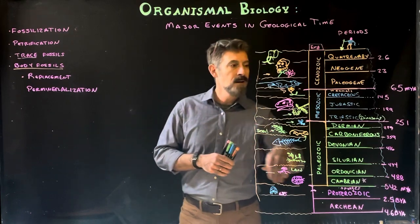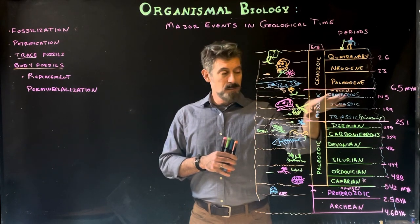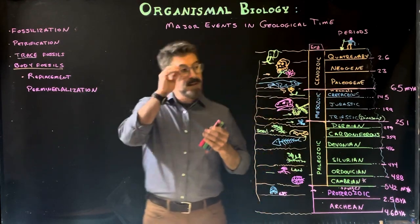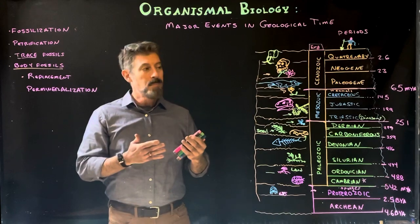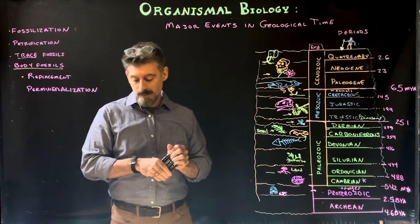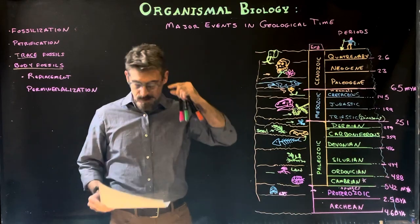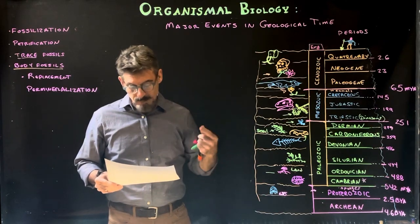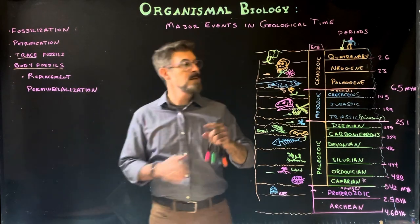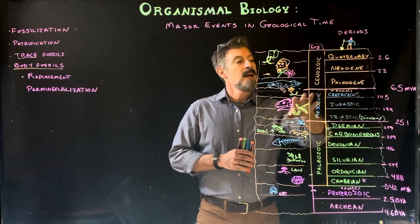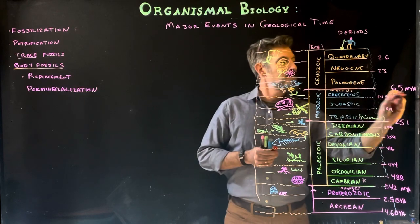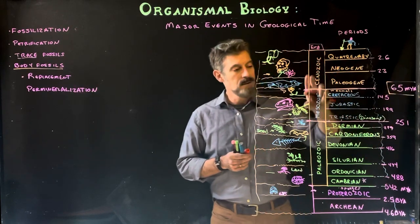Into the Cretaceous period we start to see more mammals, feathered dinosaurs, and the beginnings of birds. Mammals really start to take off during this time. Marsupials also start to come on the scene in the Cretaceous. Then we have a mass extinction, which is kind of where we separate the different eras.